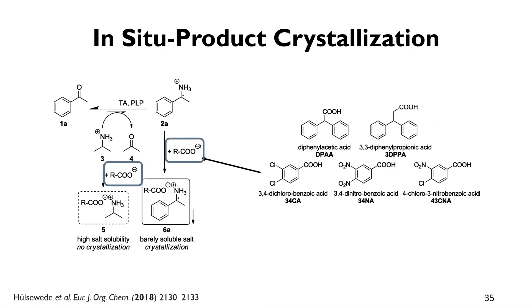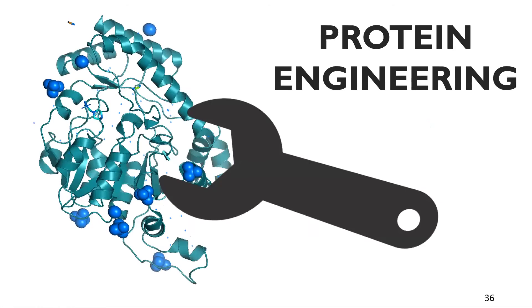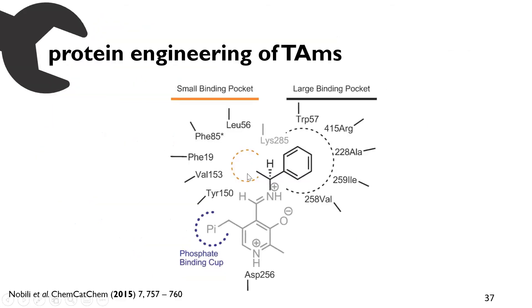In 2018, another idea was published: so-called in-situ product crystallization, where you have your amine of interest and let it crystallize with a specific acid, and then you can simply remove the crystal from your reaction mixture and pull the equilibrium toward your product side. Additionally, we can also engineer our protein in order to accept several new substrates, because the small binding pocket doesn't allow us to bind anything other than a methyl or ethyl group.